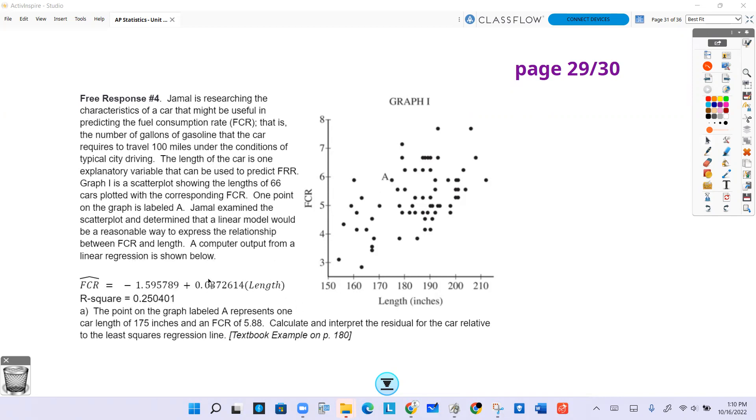The point A in the graph represents one car with length at 175 inches, right about in the middle there, and an FCR of 5.88. Calculate and interpret the residual for the car relative to the least squares regression line.